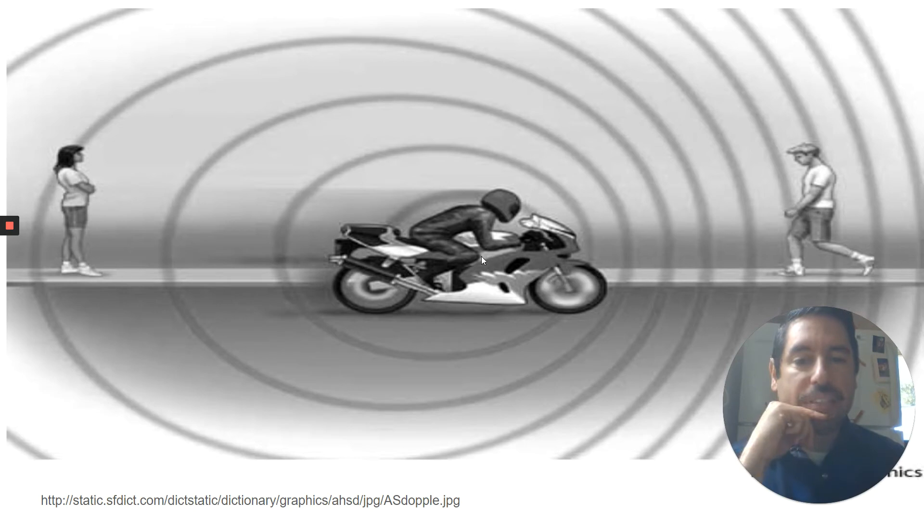So what this means is if this motorcycle is making a noise and you're over here, the waves are getting squished on this side. So you hear the neee because it's a higher frequency. The waves are hitting you very quickly. And if you're the woman on the left, the motorcycle is going away from you, the waves are getting spread out. So you hear the it's much lower pitched, lower frequency.